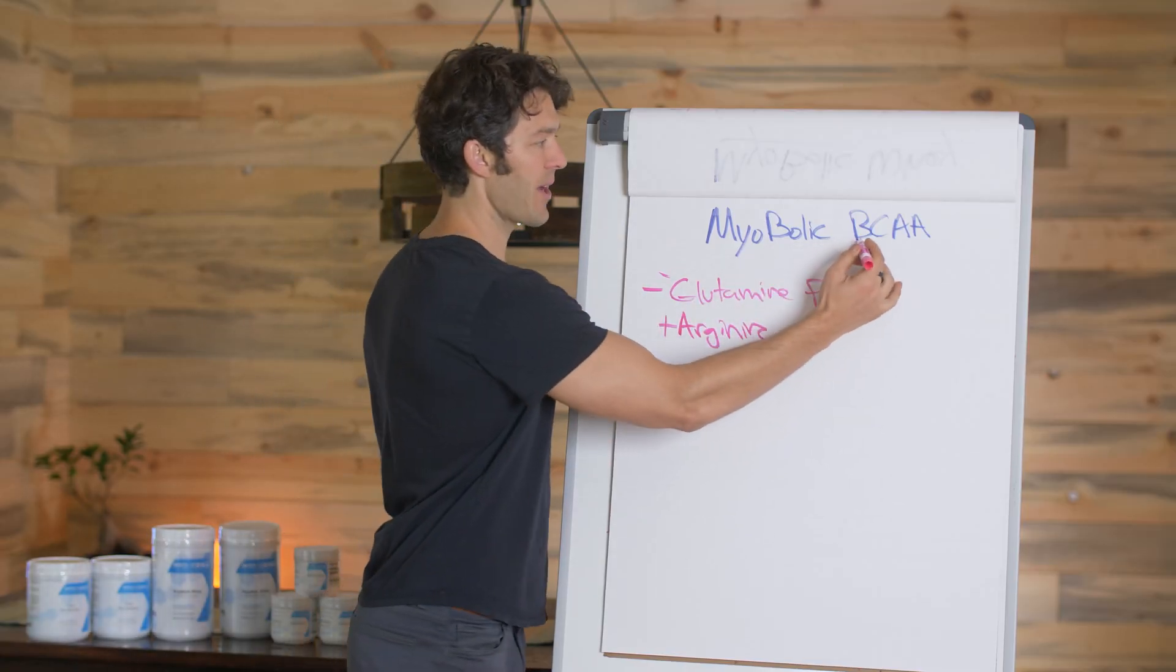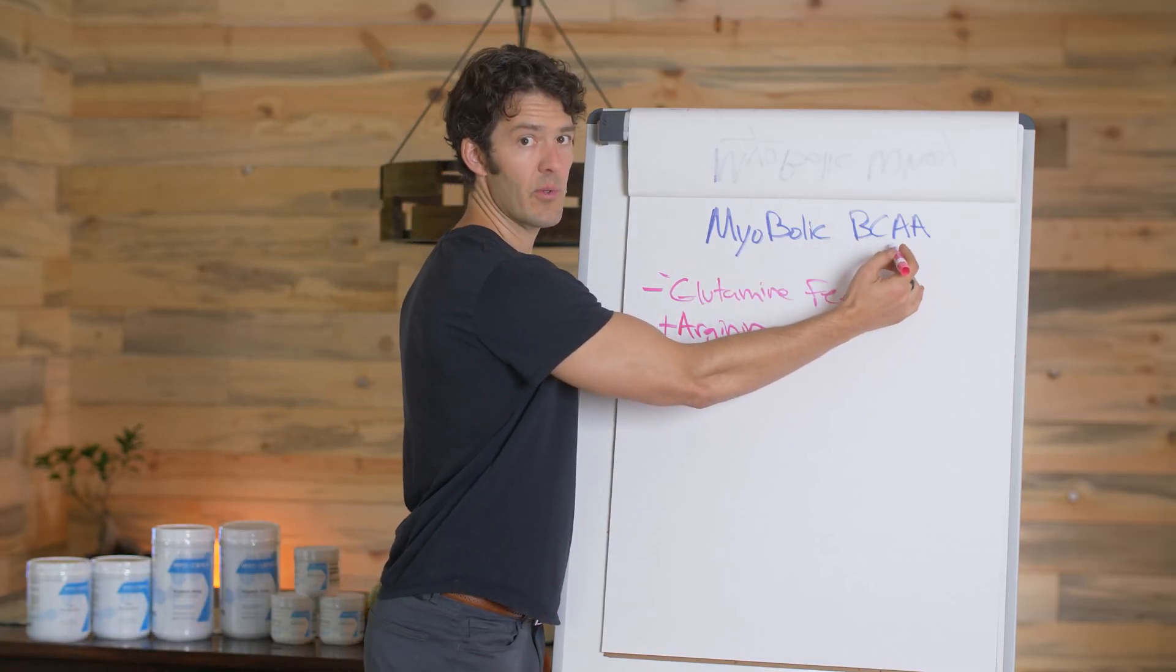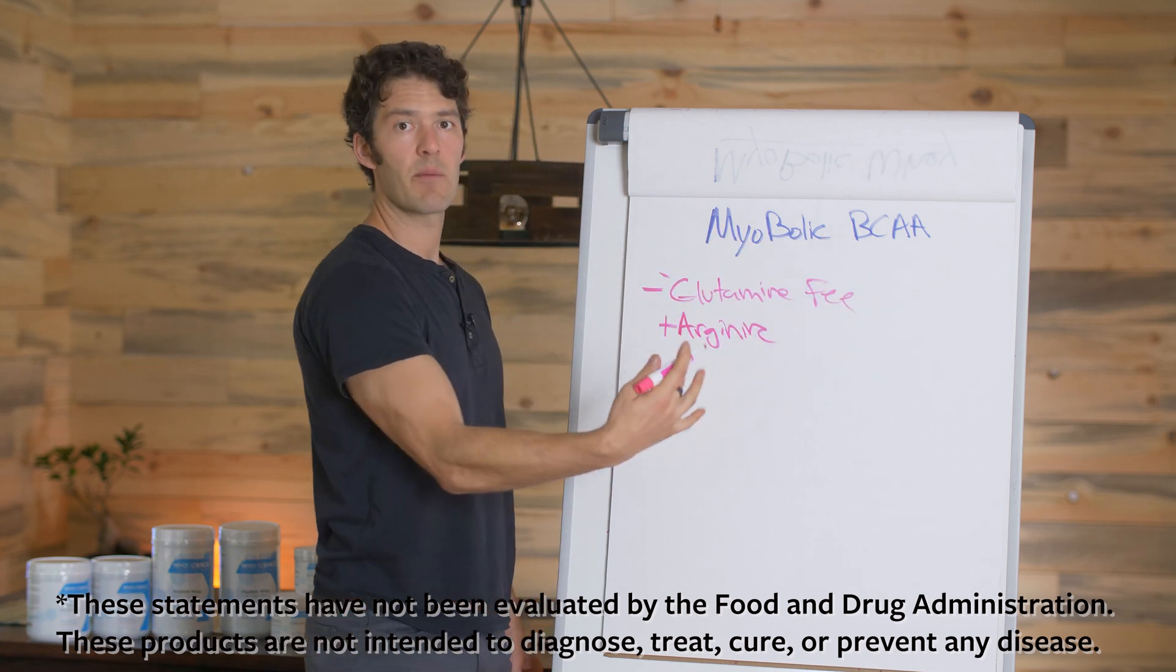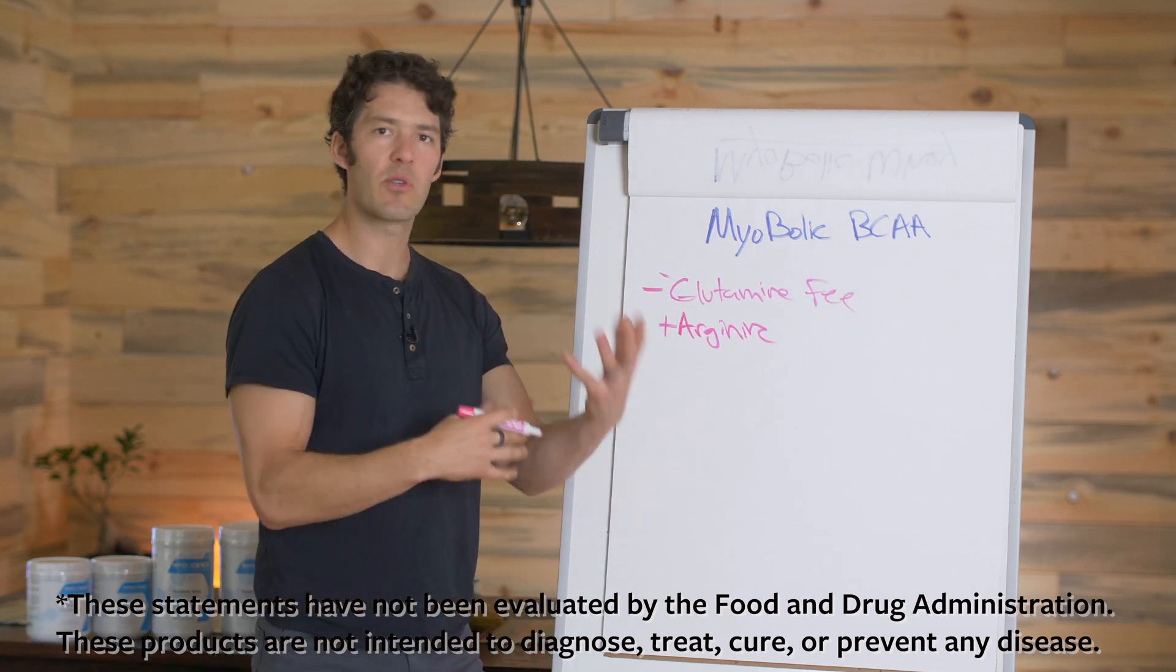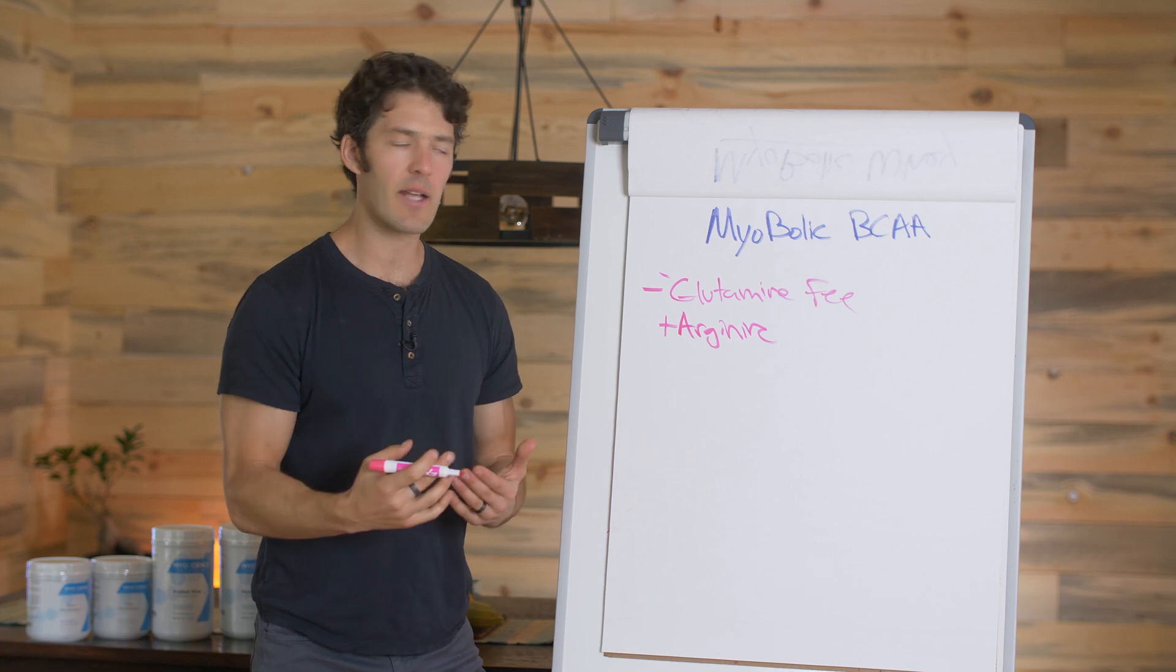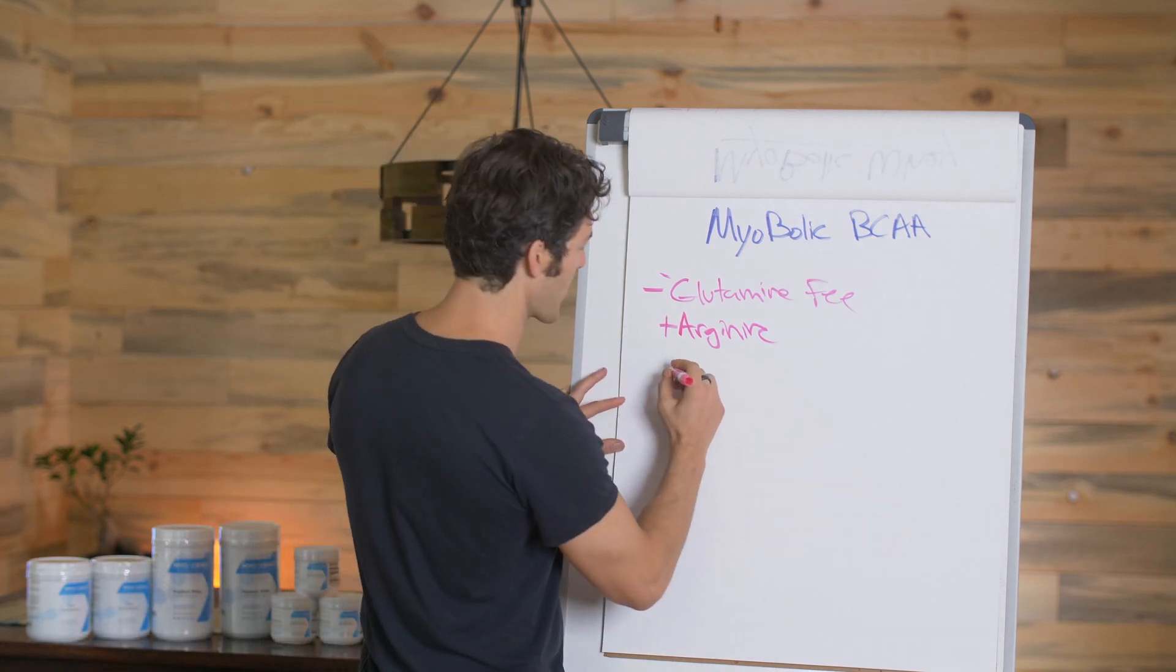So when it comes to your branch chain amino acids, leucine, isoleucine, and valine, leucine is going to be the big driver of, as you know, this whole mTOR and muscle protein signaling cascade. Leucine helps there.